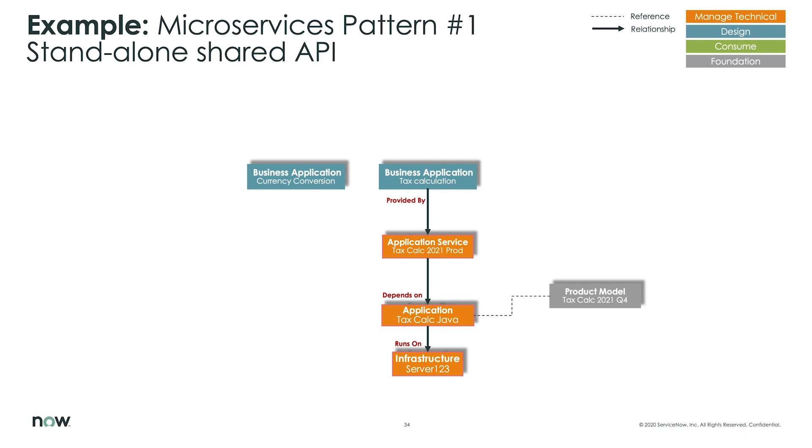The business application is tax delegation. And the product model could be a third party application. And that's often updated on a periodic basis, like once a quarter or something like that. Whenever tax laws change in the tax calculations have to reflect that.